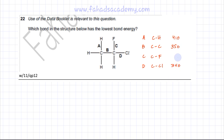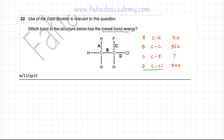The C-F bond energy is not present in the data booklet, so you have to estimate what it is. The question is asking which bond has the lowest bond energy. So far, among the known values, if you ignore the C-F bond, the lowest bond energy is D — the C-Cl bond at 340 kJ/mol.